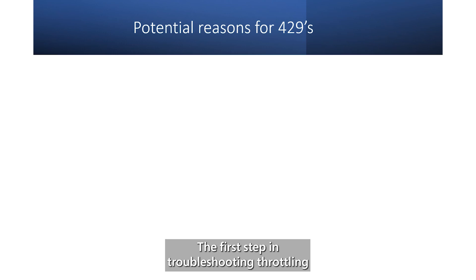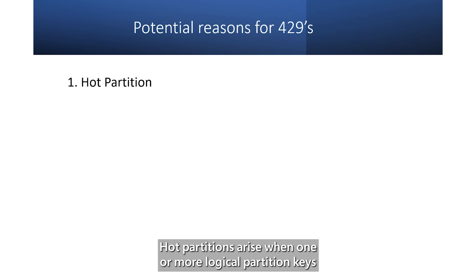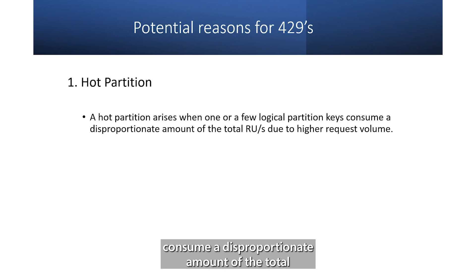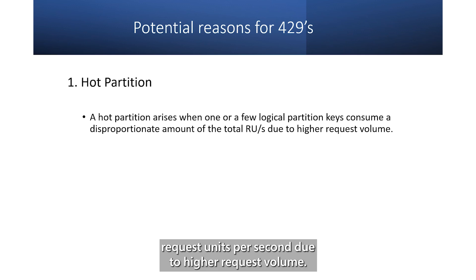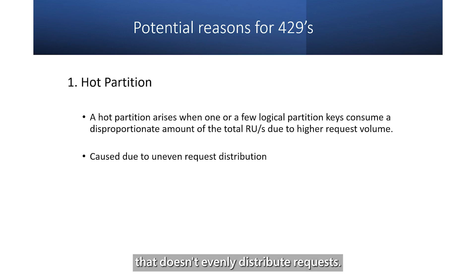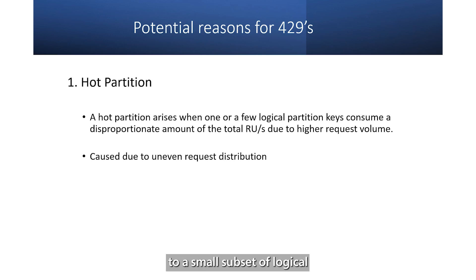The first step in troubleshooting throttling is to check for a hot partition. Hot partitions arise when one or more logical partition keys consume a disproportionate amount of the total request units per second, due to higher request volume. This can be caused by a partition key design that doesn't evenly distribute requests. When this happens, many requests are directed to a small subset of logical or physical partitions that become hot.